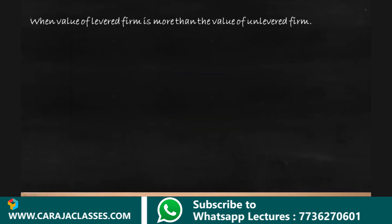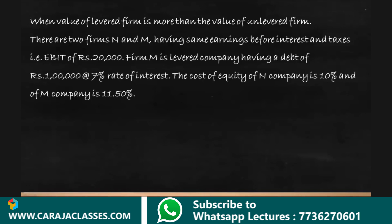Let us take a case where the value of the levered firm is more than the value of the unlevered firm. The MM approach says that if the value of the levered firm is higher than the unlevered firm, there will be an arbitrage process wherein the value of the levered firm will come down and the value of the unlevered firm will go up until they reach an even point.